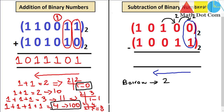Now we can subtract: 2 minus 1 is 1. In the previous column, since we borrowed from it, 2 minus 1 is also 1. Then 1 minus 1 is 0, and the third column has 0 left, so 0 minus 0 is 0, and 1 minus 1 is 0. This is how you subtract binary numbers.